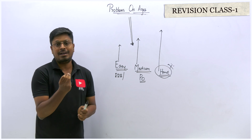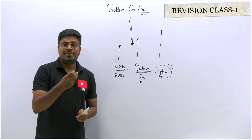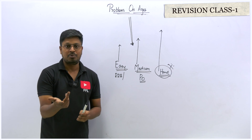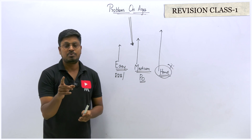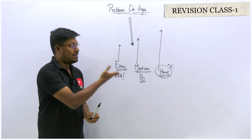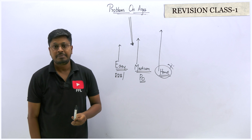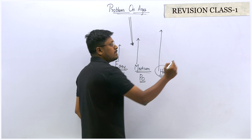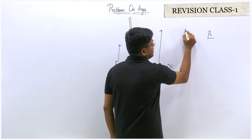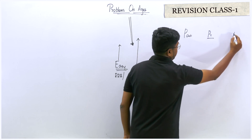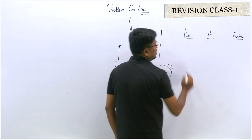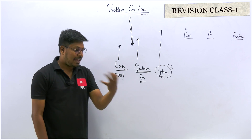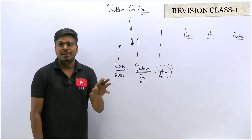Now we can have a small revision about Problems on Ages so we can recall all the important concepts before the live class. In Problems on Ages, three things are most important: first is the present, second is the past, and third is the future. The question will always depend on these parts. We have to identify whether the given age is present, past, or future, because that will not be directly given.